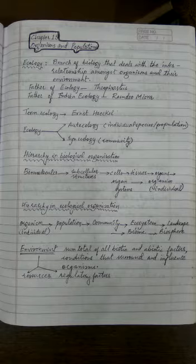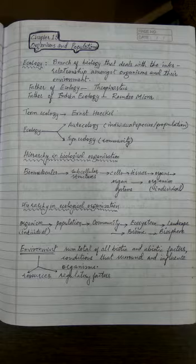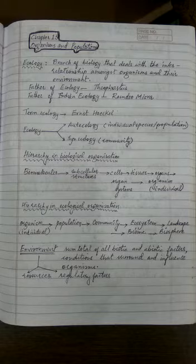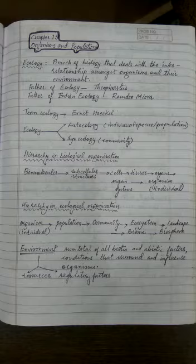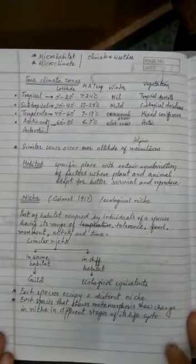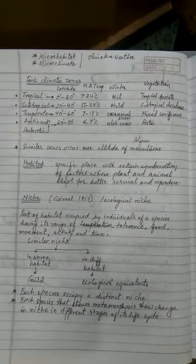We also learned that environment is the sum total of all the abiotic and biotic factors as well as the conditions that surround and influence the organism. Environment includes resources utilized by living organisms, and also certain regulatory factors. Apart from environment, we also covered the concepts of weather, climate, microclimate, habitat, and microhabitat.